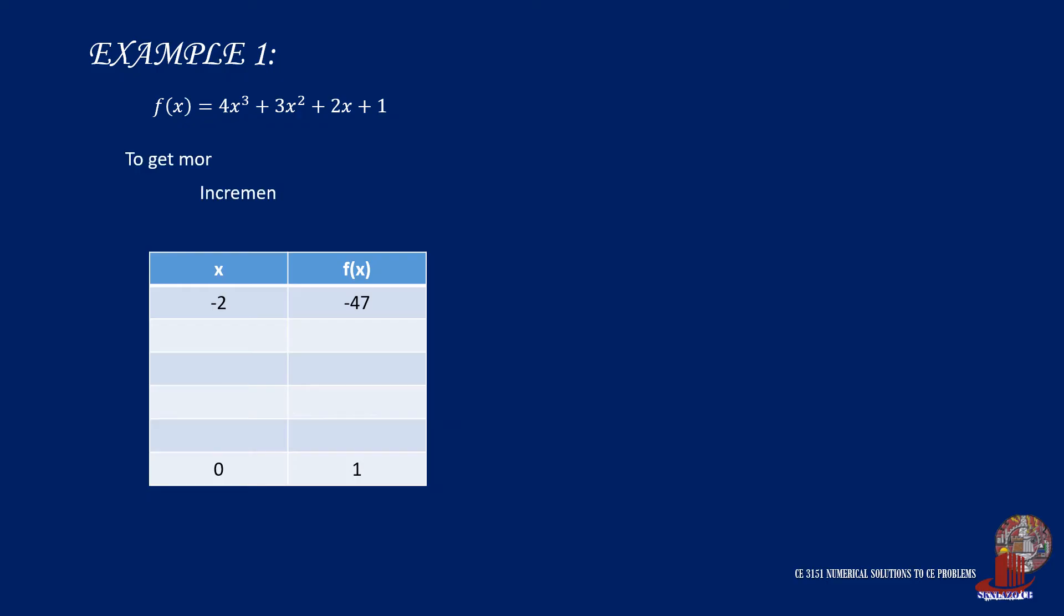This time, focusing on intervals of 0.4, we work between -2 and 0, where we found the f(x) values earlier. Starting with -1.6, f(x) shows -26.264. Move another notch or 0.4 from -1.6. Thus, using x of -1.2, f(x) is solved as -12.632.